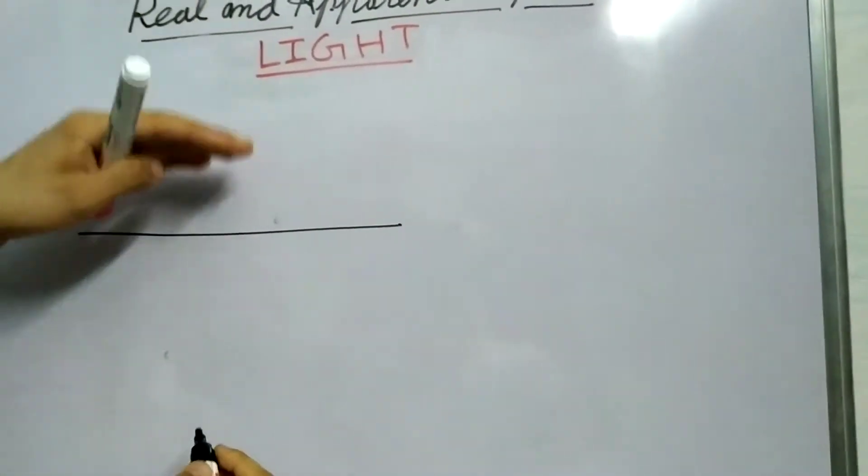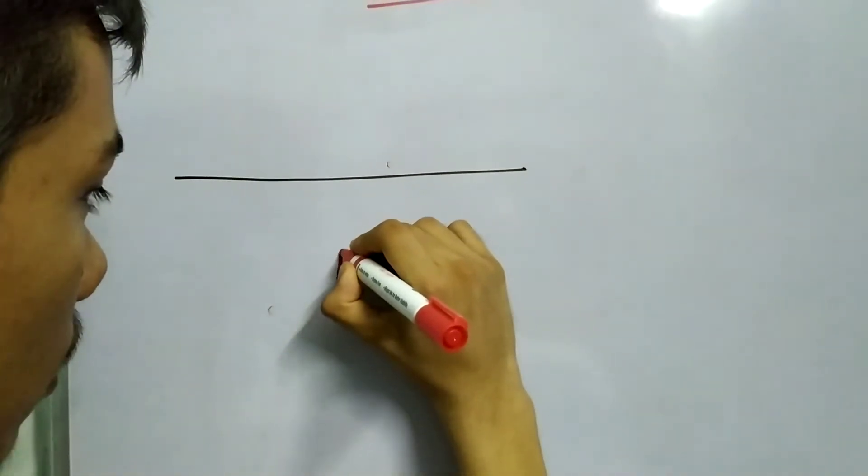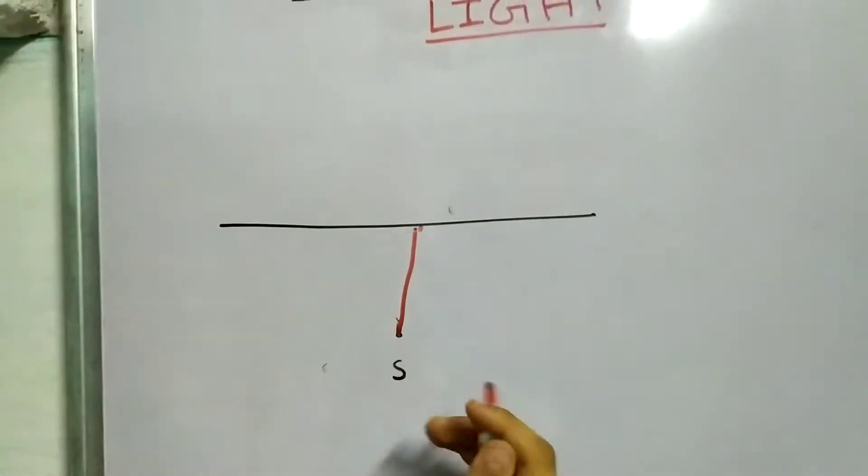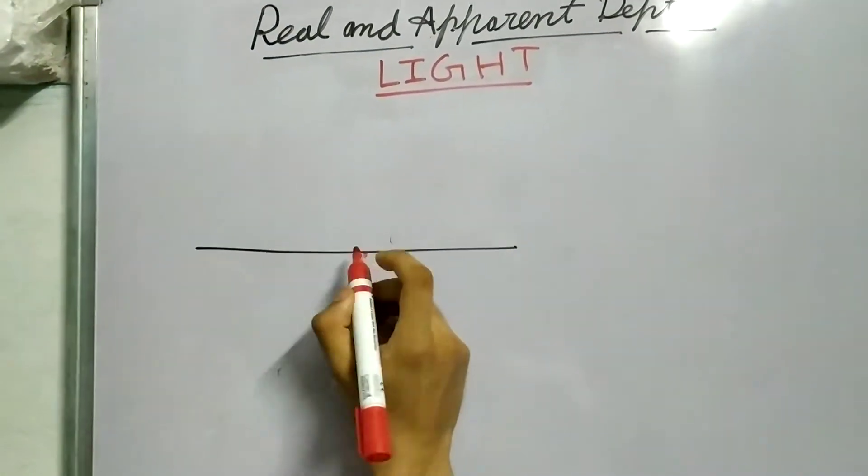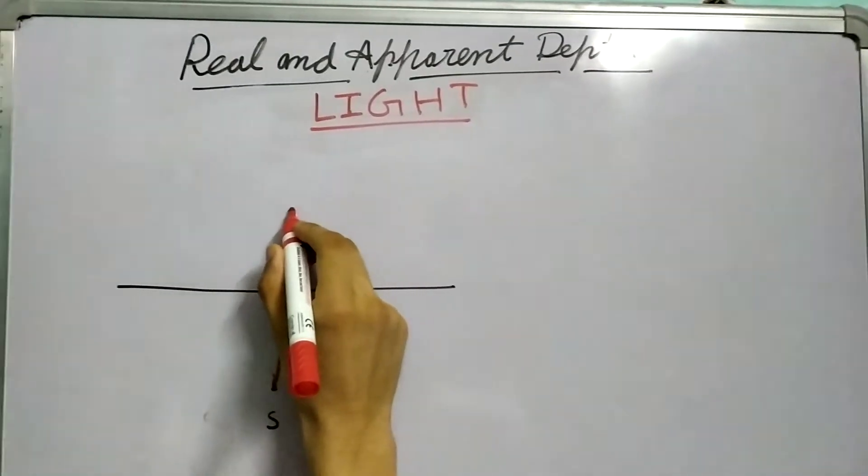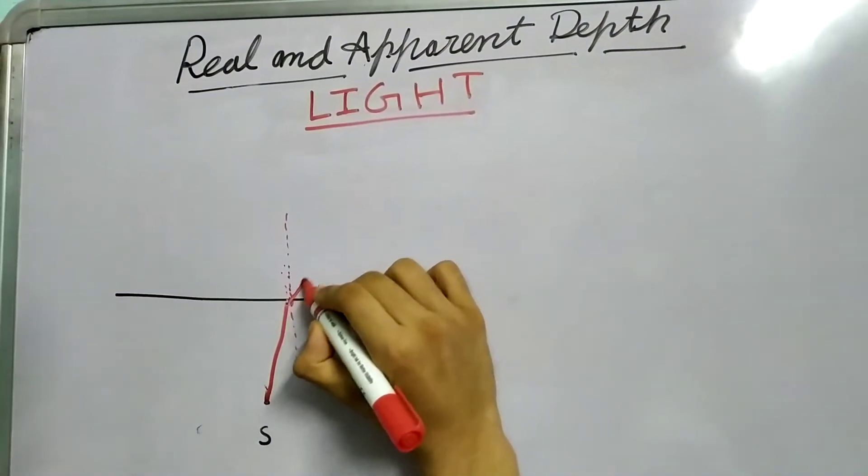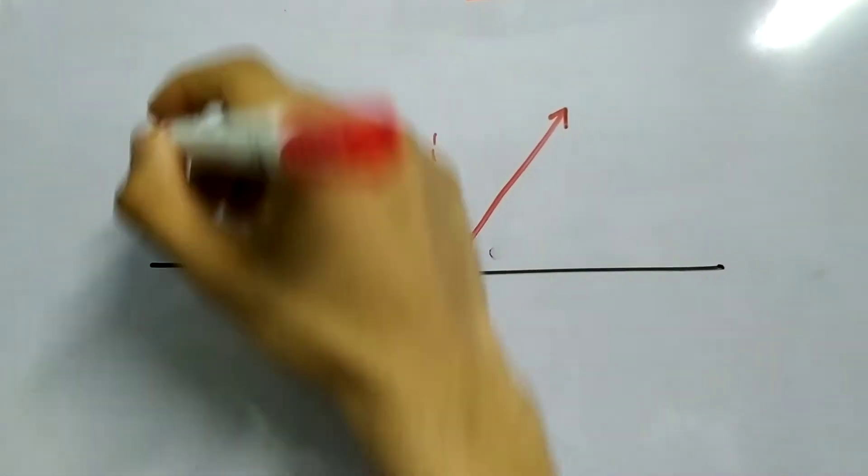So here is the interface of two media. Here is the source. Let's call this source S. And this source emits light. All light is reflected by it. It is as good as it emits light. Now light goes something like this. Now if the light goes from an optically denser medium to an optically rarer medium, it will bend and it will bend away from the normal. Let's draw this. So it will bend away from the normal in this direction. And similarly, we can draw another ray. This happens.